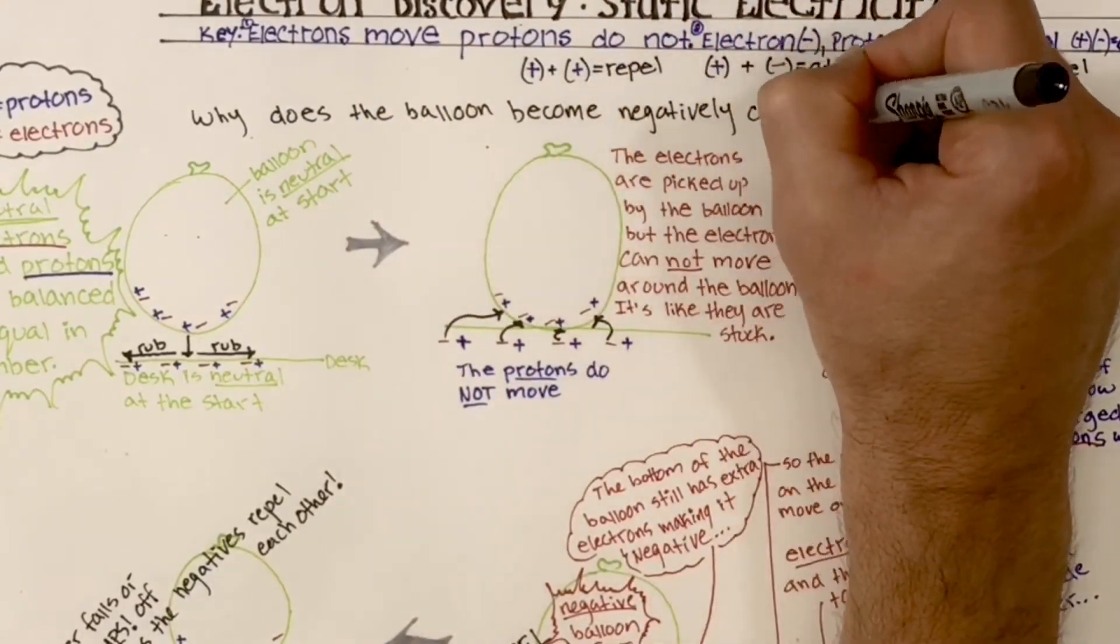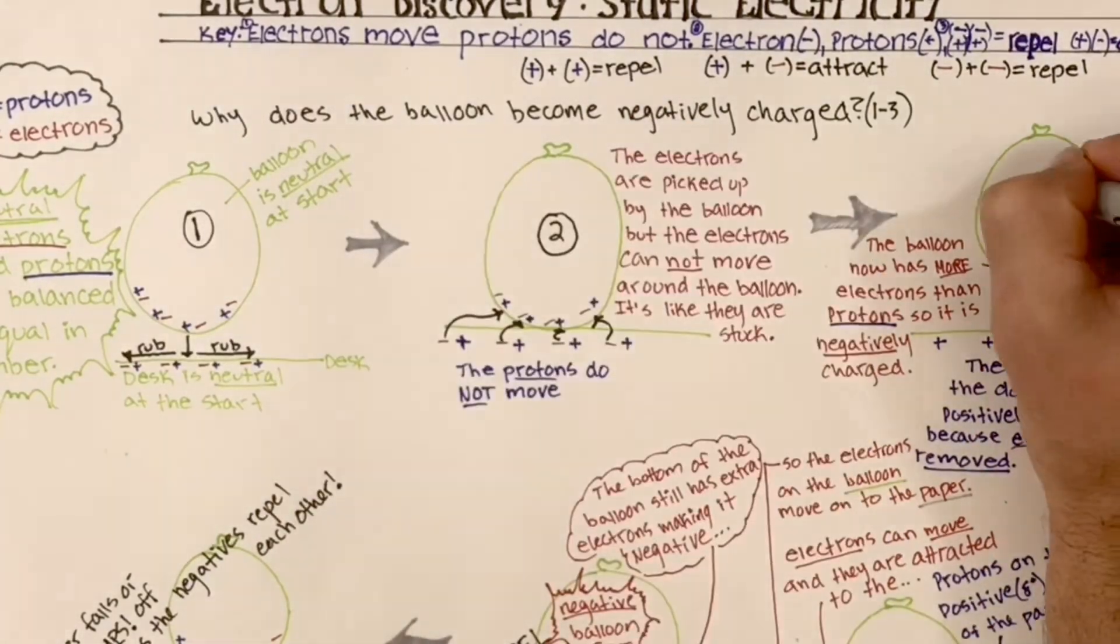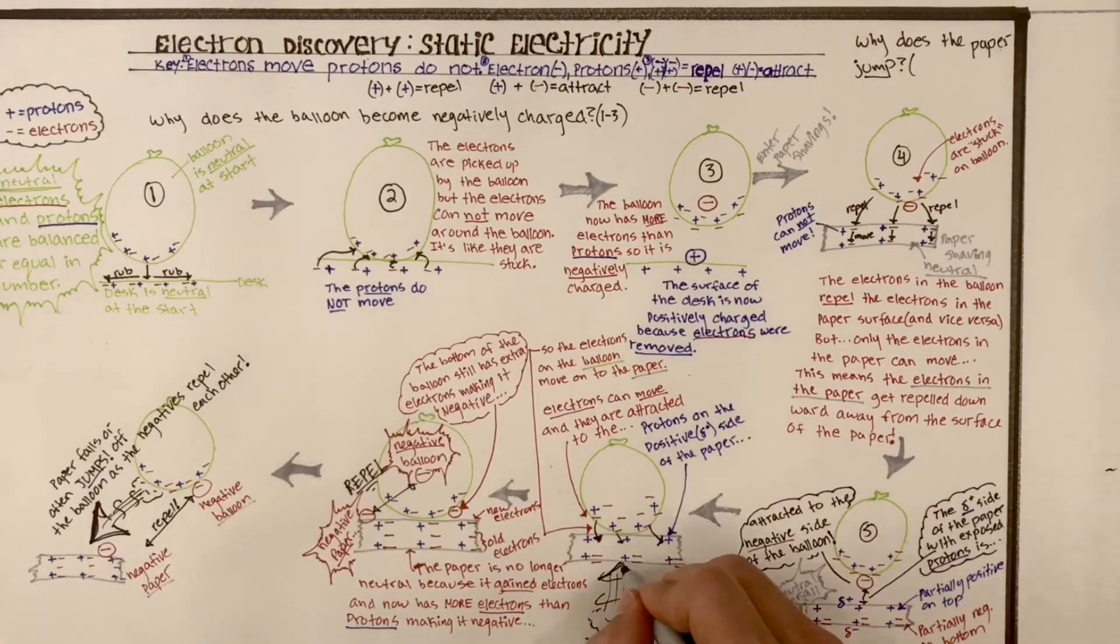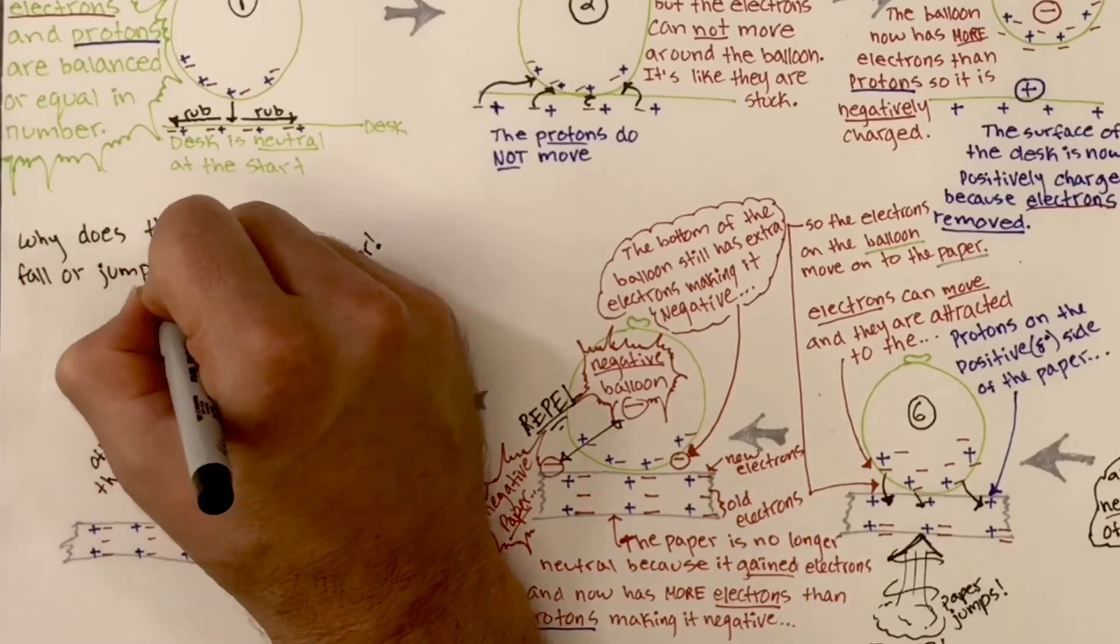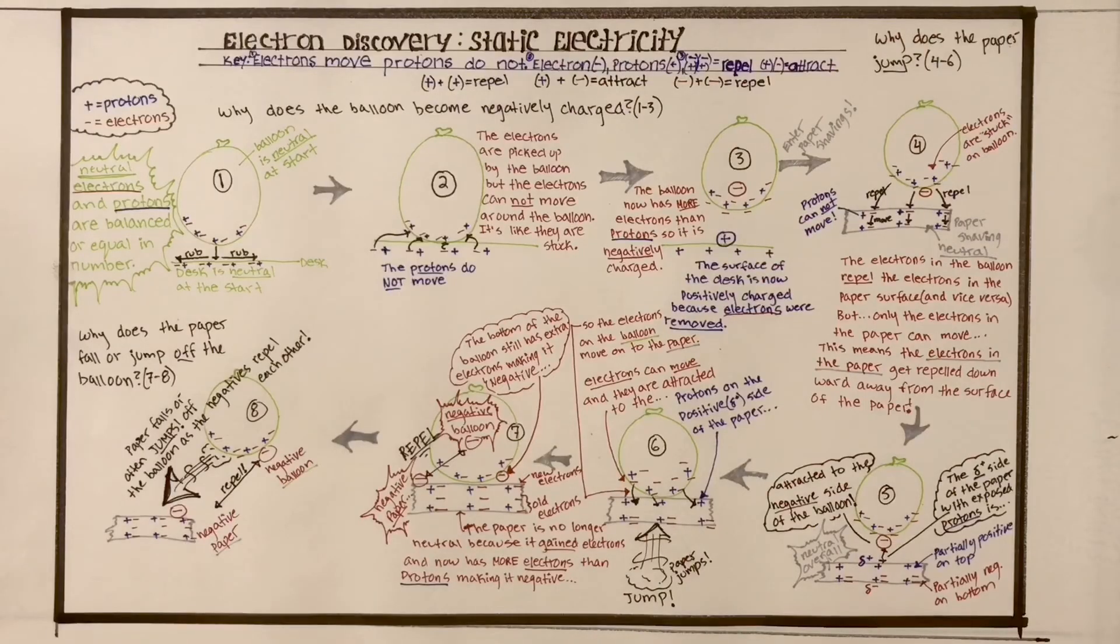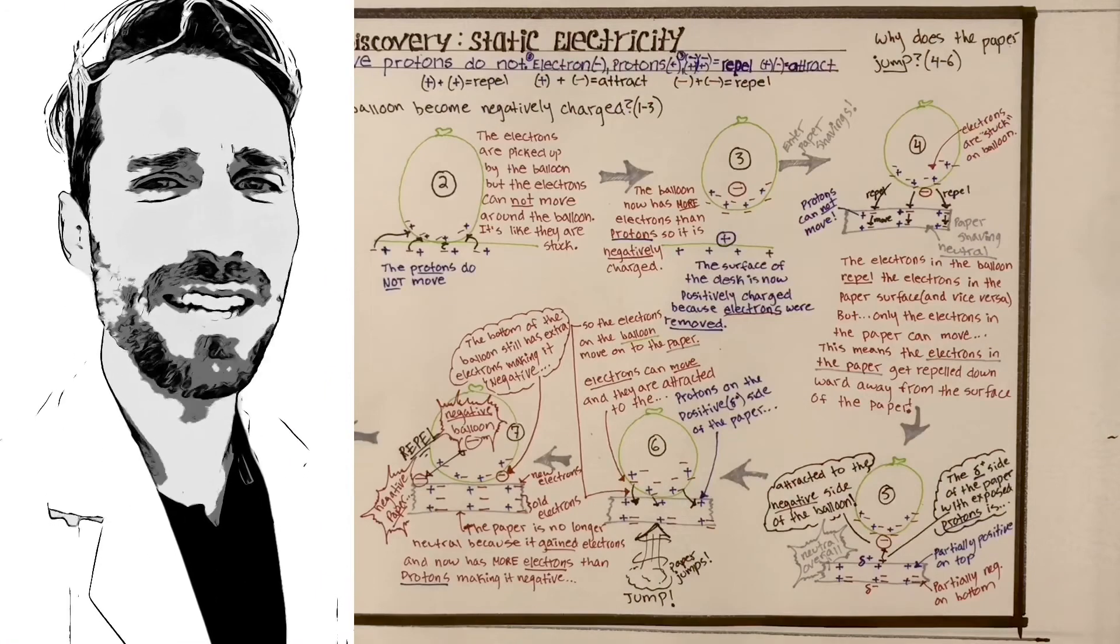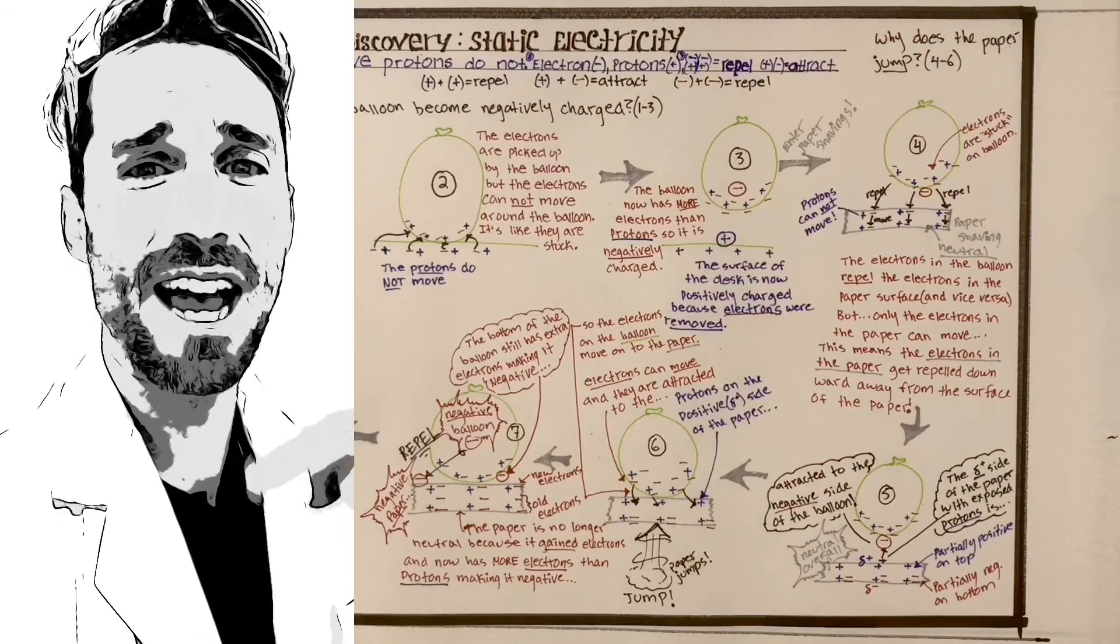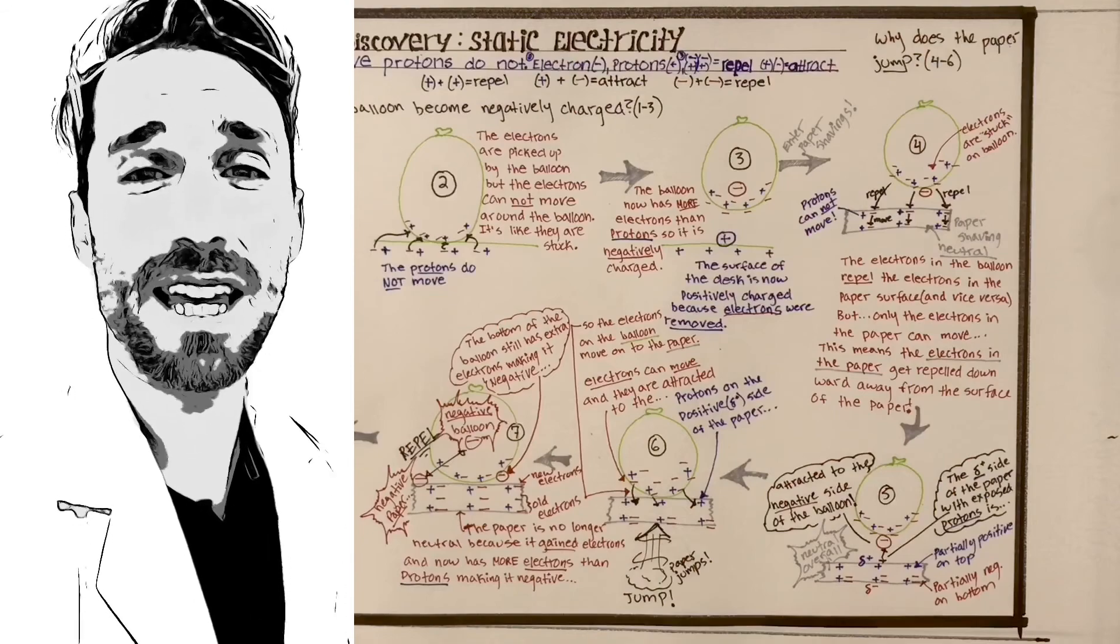And we have three questions. Why does the balloon become negatively charged? Well, that's stages one, two, and three. And the next question, why does the paper jump? That's four, five, and six. And the third one, why does the paper fall or jump off the balloon? Well, that's seven and eight frames. That's largely what I think is going on. There's some other things we could probably toss in. If you have any additional ideas or some critique, toss those down in those comments. I'd love to hear your ideas. And we'll maybe next time make an even better diagram.